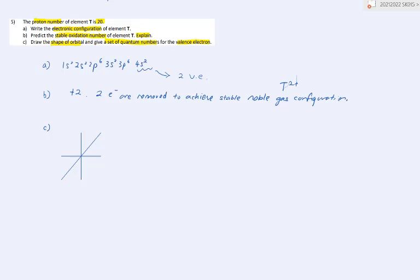For part C, draw the shape of orbitals. You need to show your axes: z-axis, x-axis, and y-axis. The shape of orbitals refers to the valence electron. Since the valence electron falls into the 4s orbital, you have the shape of an s orbital, which looks like a circle. For the quantum numbers: n equals 4, l equals 0, m equals 0, and spin equals positive half or negative half. Remember, only give one set of quantum numbers.